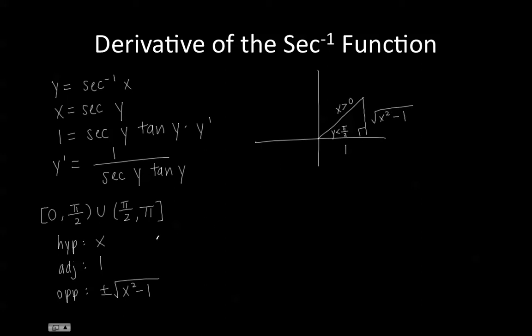However, if we chose a y value in this range, or in other words, if we chose a y value greater than pi half, then secant of y would be negative.